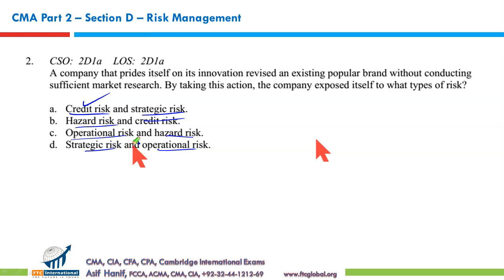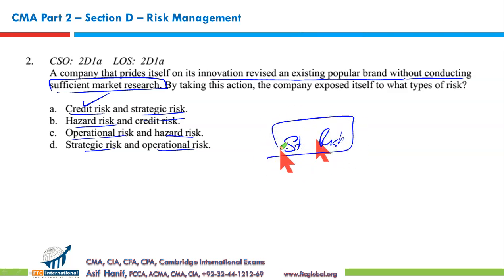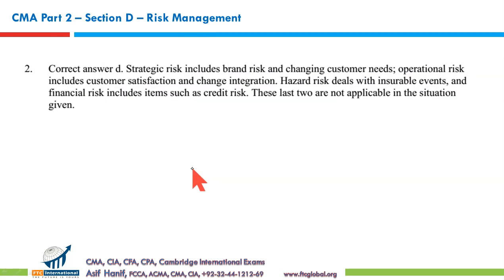So under this, a company that prides itself on innovation revised an existing popular brand without conducting sufficient market research. Customer needs and economic factors that define customer spending behavior were not looked at — that tells us it's a strategic risk. And since conducting market research was part of the operational plan, not doing so is a failed process — that's also an operational risk. So it's both strategic risk and operational risk together, making D the correct option.